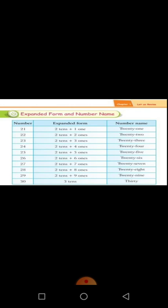Next, another example. The number is 22. So, 2 is in the 1's place and 2 is in the 10's place. Expanding the number: 2 tens and 2 ones makes 22. Number name: TWENTY-TWO, 22.